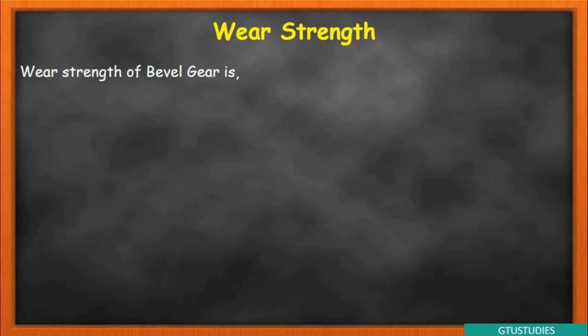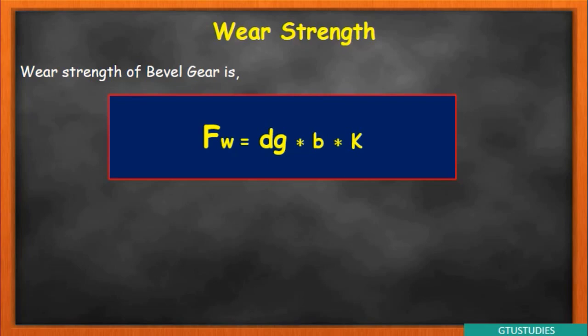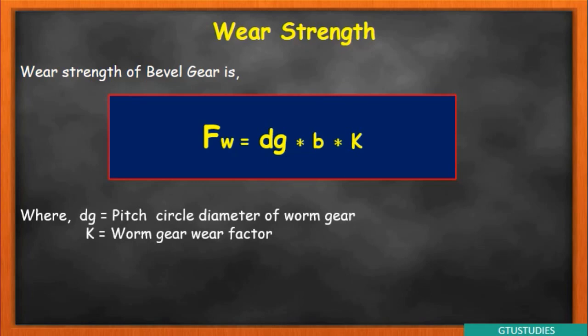The second strength is wear strength. The wear strength equation is very simple: FW = DG × B × K, where DG is the pitch circle diameter of the gear, B is the face width, and K is the worm gear wear factor. The wear factor K value is available in the data book, so don't worry — from that you can easily find FW.